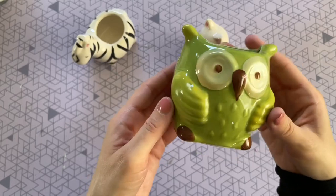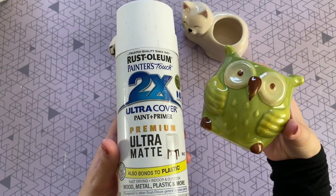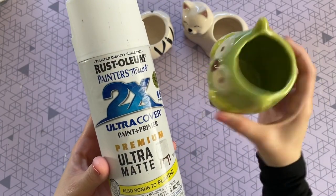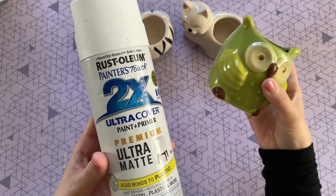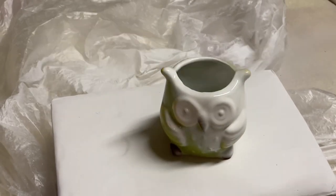Since the owl is the only one that I'm going to be painting, I'm going to get started on that first. I'm going to be using that same white spray paint, the matte ultra cover. And I'm just going to be giving this two coats of that spray paint just to kind of give it a nice neutral look and really elevate it.